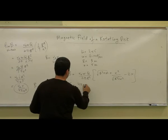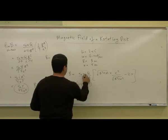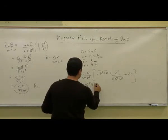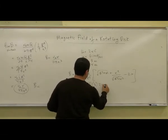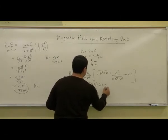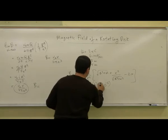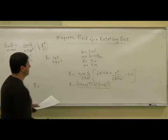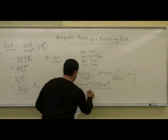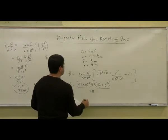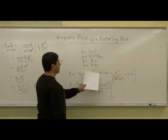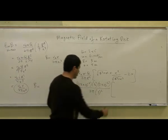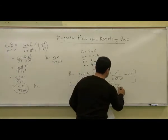Mu zero is 4 pi times 10 to the minus 7. Omega is 6 radians per second. Q is 2 microcoulombs. And you have 2 pi r squared, where r is equal to 3. Square root of 3 squared plus 4 squared — I made it on purpose so it's 5.